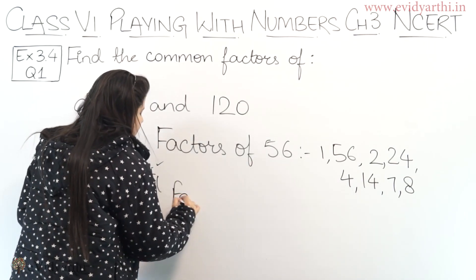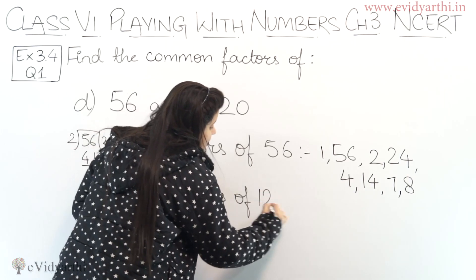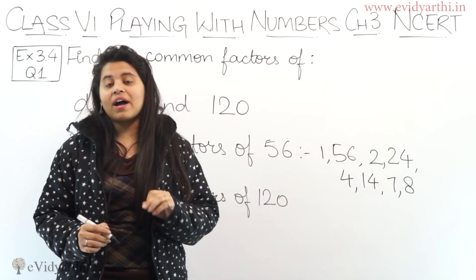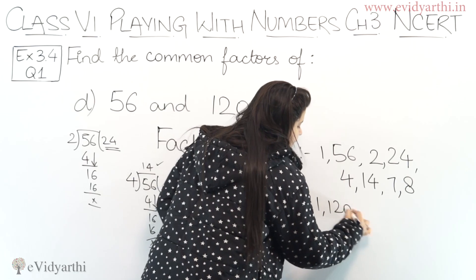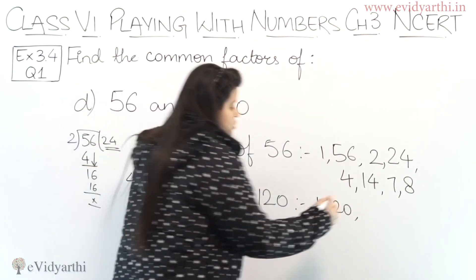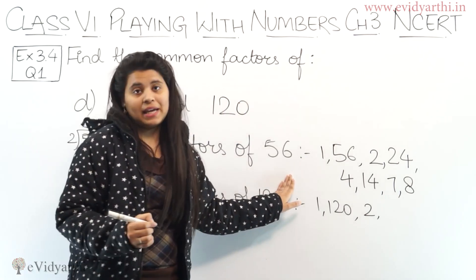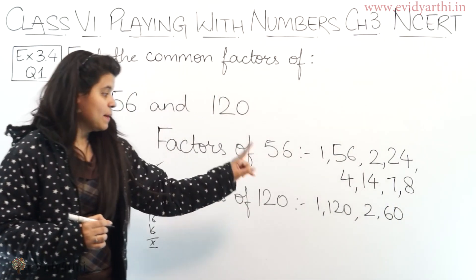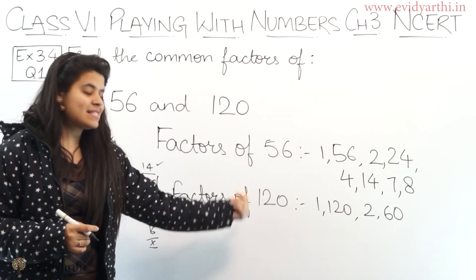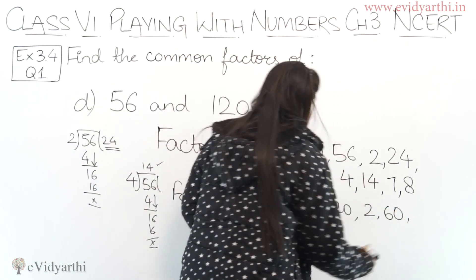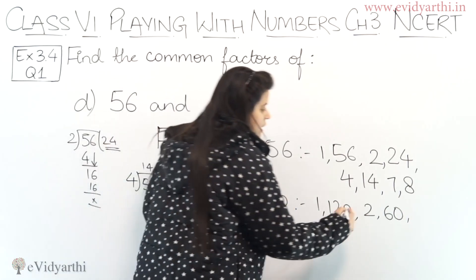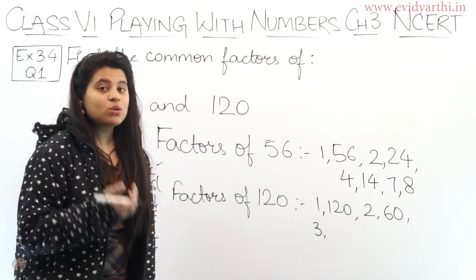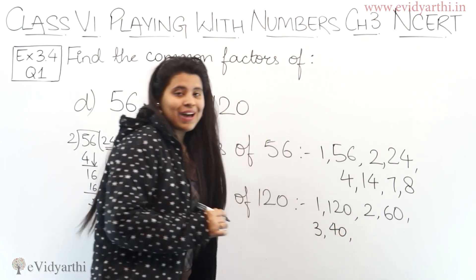Now let's find the factors of 120. First, 1 and 120 are factors. Then 2: since the last digit is 0, it's divisible by 2. 2 into 60 is 120, so both 2 and 60 are factors. Next, 3: adding digits of 12 gives 3, so 3 is a factor. 3 into 40 is 120, so both 3 and 40 are factors.